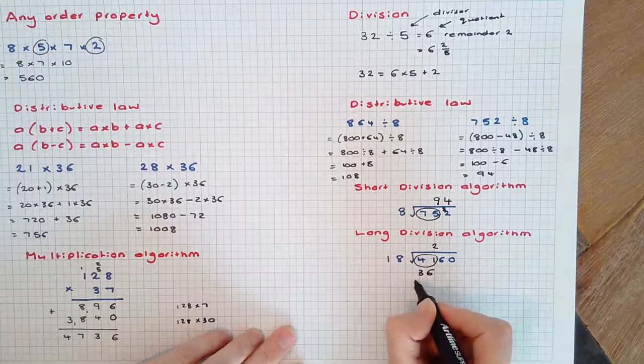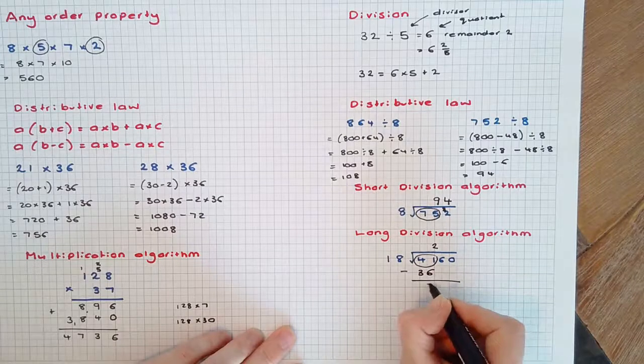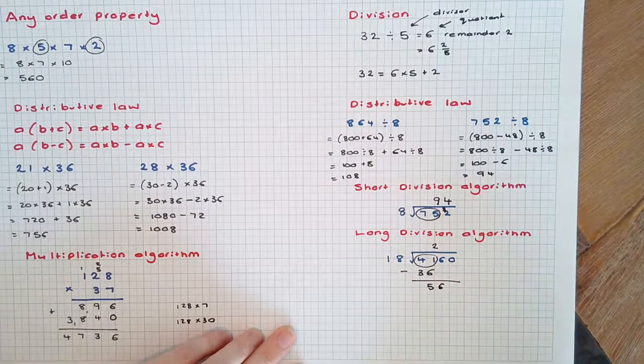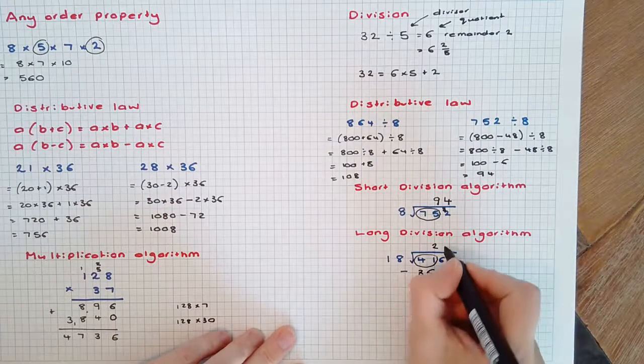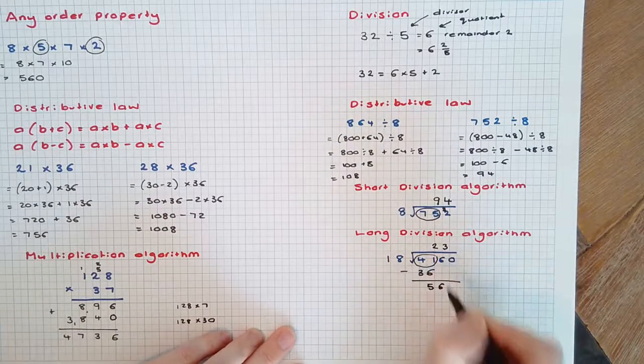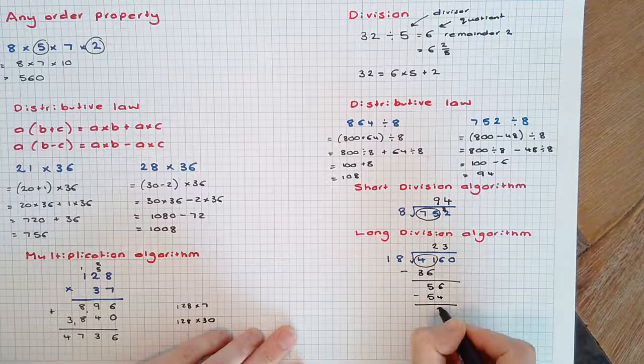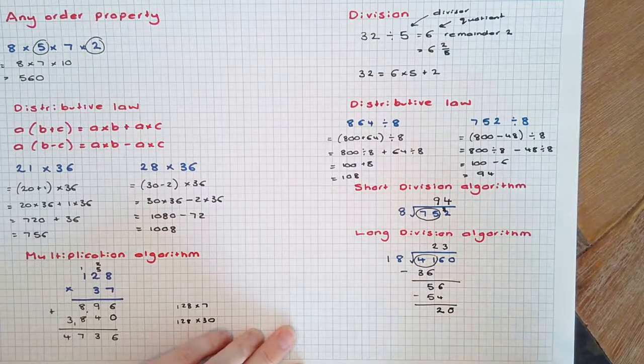2 × 18 is 36. We subtract: 41 - 36 = 5, and bring down the next place value, which is 6. 18 goes into 56 three times. 3 × 18 is 54. We have 2 left over, and bring down the next place value, which is 0.